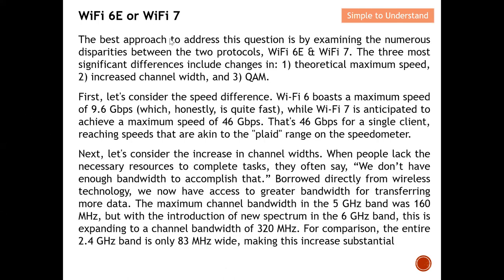The best approach to address this question is by examining the numerous differences between Wi-Fi 6E and Wi-Fi 7 — to help you decide whether to choose Wi-Fi 6E now or wait and embark on Wi-Fi 7. The three most significant differences are: theoretical maximum speed (throughput/data rate), increased channel width, and QAM.